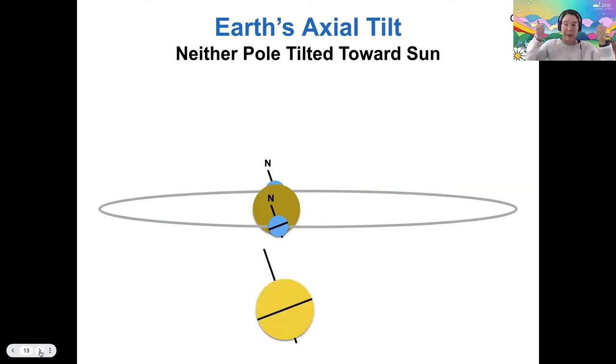Okay, so equinoxes, both hemispheres are then evenly illuminated, so neither one is receiving any more or less sunlight. The equinoxes happen March 21st and September 21st, so we just passed through our autumnal equinox recently.